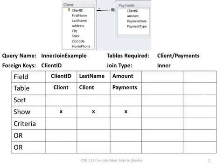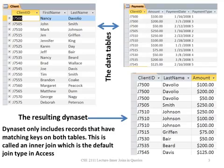How do these lines or joins get created? They were created when you set up the relationships at the very beginning when you created your table structures and your database structure. Here I have the client ID, last name, and amount — that's what I wanted to display in my dynaset.